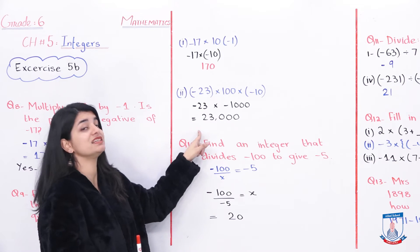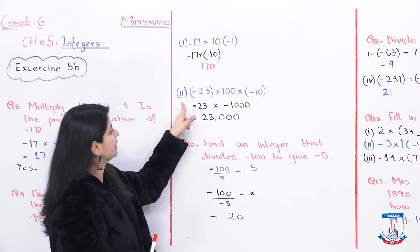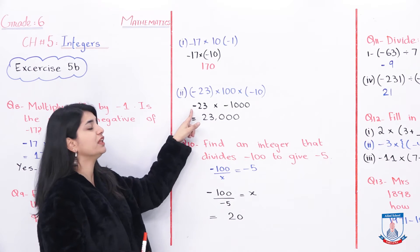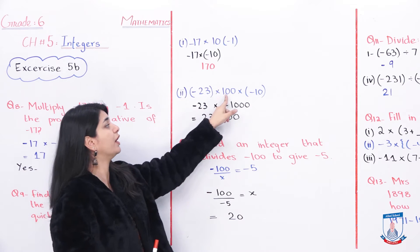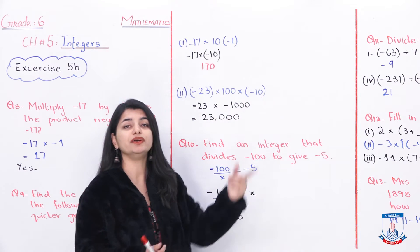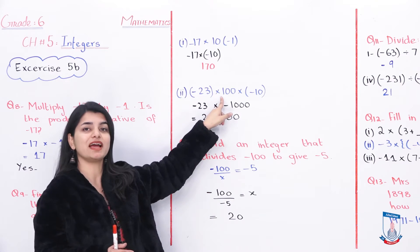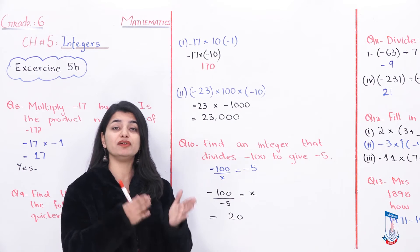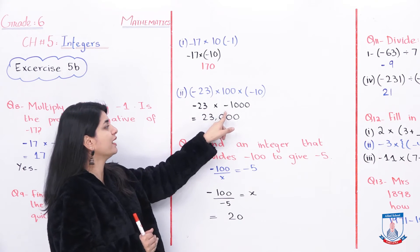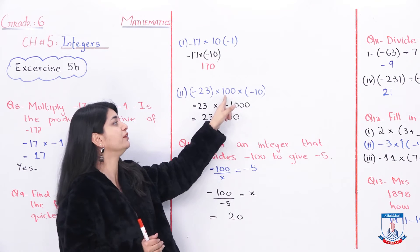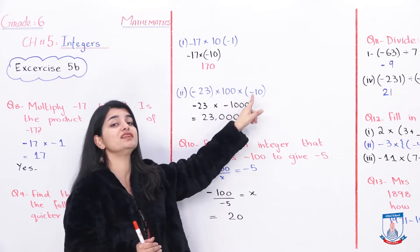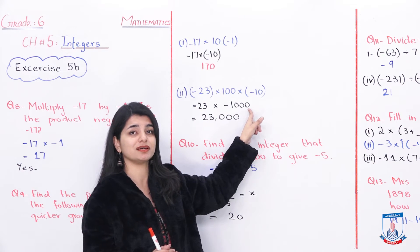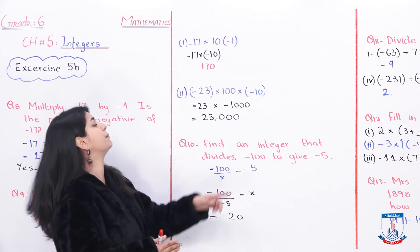Now for the second part: minus 23 multiplied by 100 multiplied by negative 10. Start by opening the brackets. Minus 23 stays as it is. Multiply 100 by 10: 100 into 10 is 1000. 100 has no sign so it is positive; 10 has a negative sign. Positive multiplied by negative — different signs — so we get minus. Therefore the result is minus 1000.